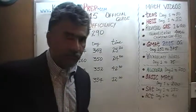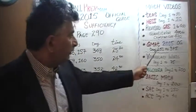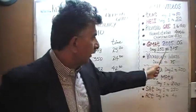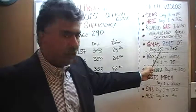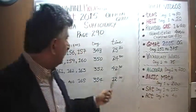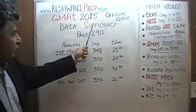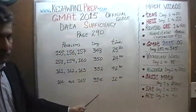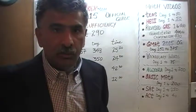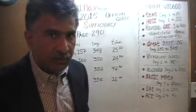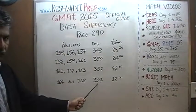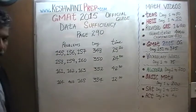You will find the solutions to all the data sufficiency problems — all the math problems appearing in the 2015 official guide — from day number 251 through 375. All the data sufficiency problems are even numbered; all the problem solving questions are odd numbers. To look for any particular video, just type in GMAT Math day 354 and the video will pop right up.